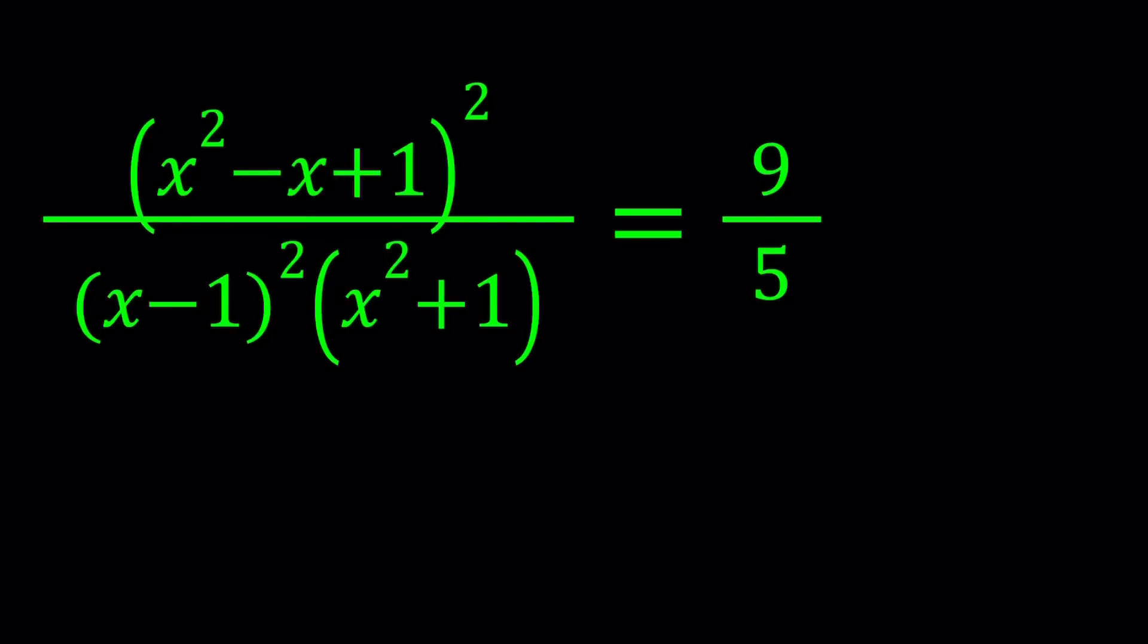Hello everyone. In this video we're going to be solving a rational equation. We have in the numerator x squared minus x plus 1 quantity squared, and in the denominator we have the square of x minus 1 multiplied by x squared plus 1, and that is equal to 9 over 5.